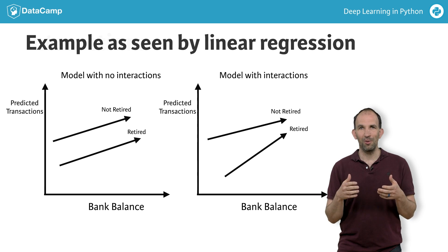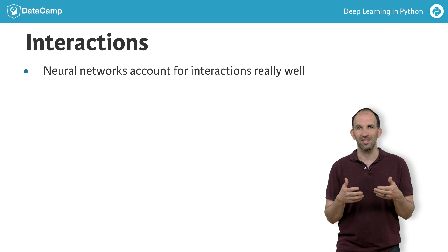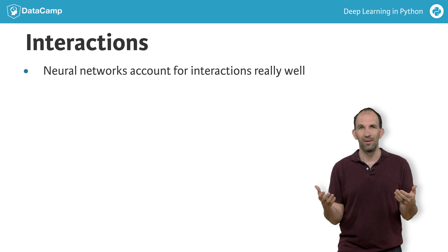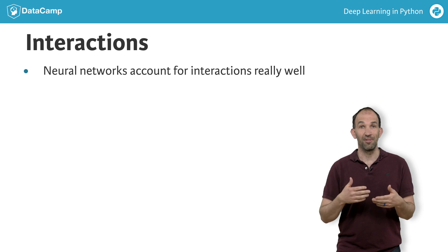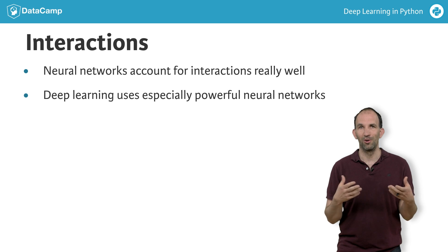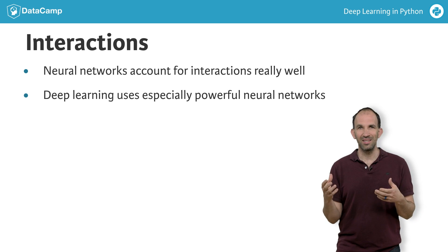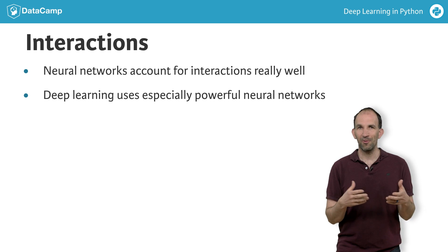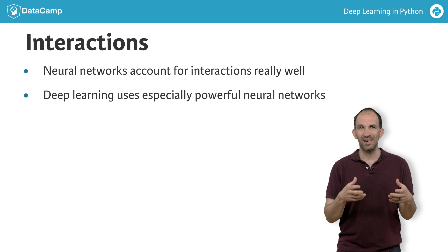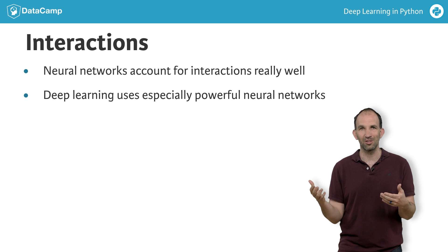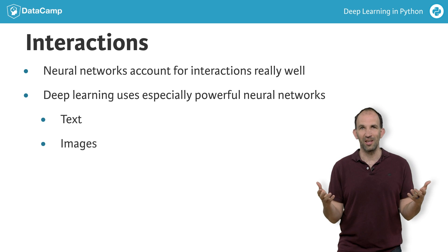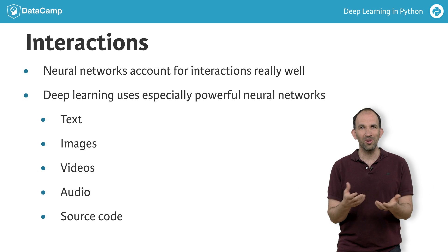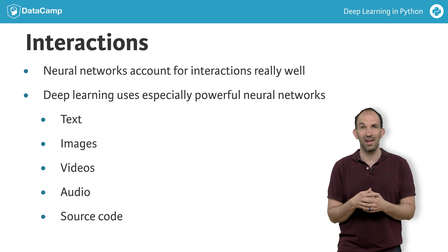Neural networks are a powerful modeling approach that accounts for interactions like this especially well. Deep learning, the focus of this course, is the use of especially powerful neural networks. Because deep learning models account for these types of interactions so well, they perform great on most prediction problems you've seen before. But their ability to capture extremely complex interactions allows them to do amazing things with text, images, videos, audio, source code, and almost anything else you could imagine doing data science with.